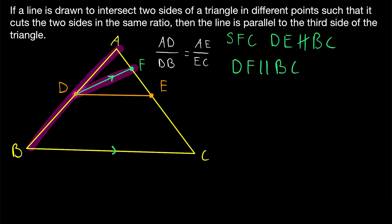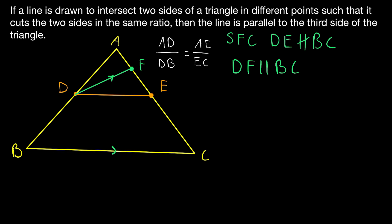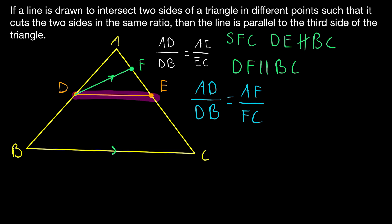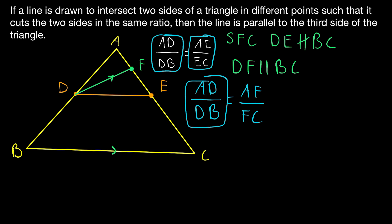Now, since we have a segment intersecting two sides of a triangle in two different points, D and F, that is parallel to the third side BC, we can use the basic proportionality theorem. This tells us that the parallel segment DF must cut these sides in the same ratio, meaning that the ratio of AD to DB is equal to the ratio of AF to FC.